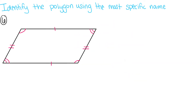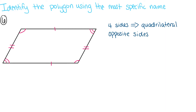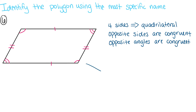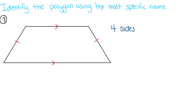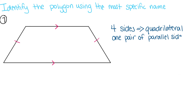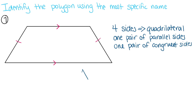Here, we have a polygon that has four sides, so it's a type of quadrilateral. The opposite sides are parallel, the opposite sides are congruent, and the opposite angles are congruent as well. This means this must be a parallelogram. Here, we have another quadrilateral with four sides. We have one pair of congruent sides and one pair of parallel sides. This means this must be a trapezoid.